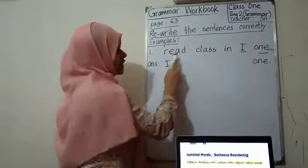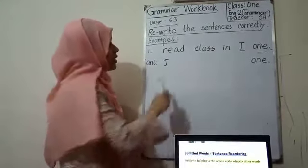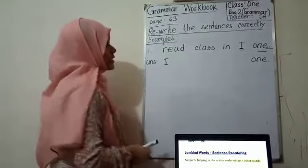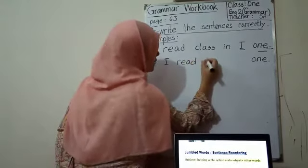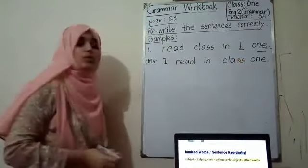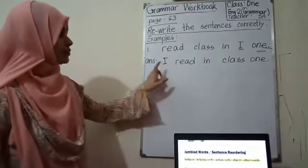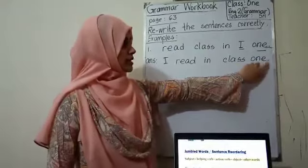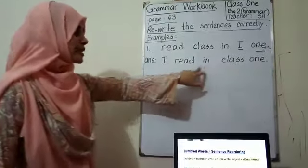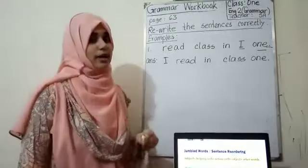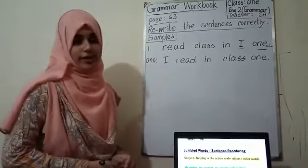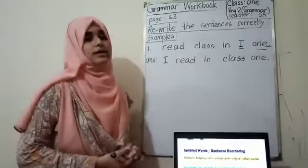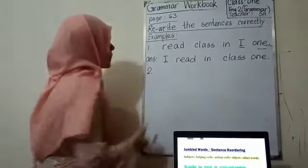But it is not correct yet. Will it be 'I read class in I1'? No. How can we say it? If I say 'I class read in I1'? No. So what will it be? It will be: 'I read in class 1.' You have to understand the meaning and then arrange the words. Since 'I read in class 1' — the sentence now makes sense.